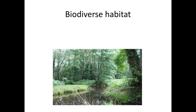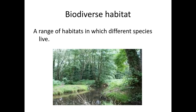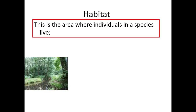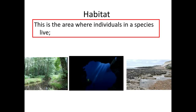The next level is habitats. Within a habitat we have a range of areas where different species can live. The definition of a habitat is an area in which individuals within a species live. You have different habitats depending on where you are, and they could really throw anything at you in the exam, so you just need to be aware — maybe watch a couple of documentaries about different types of habitats.